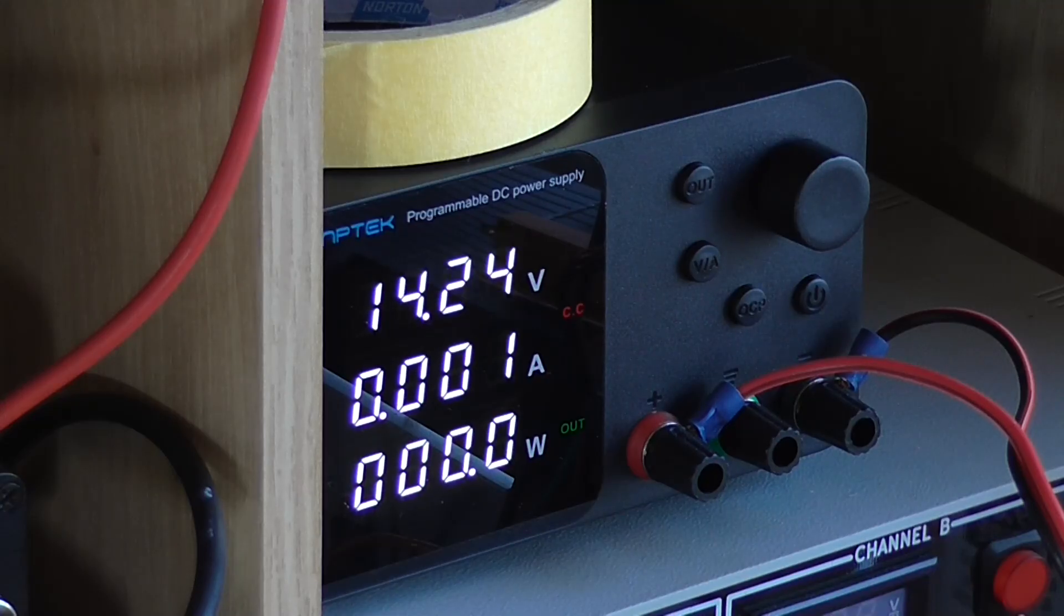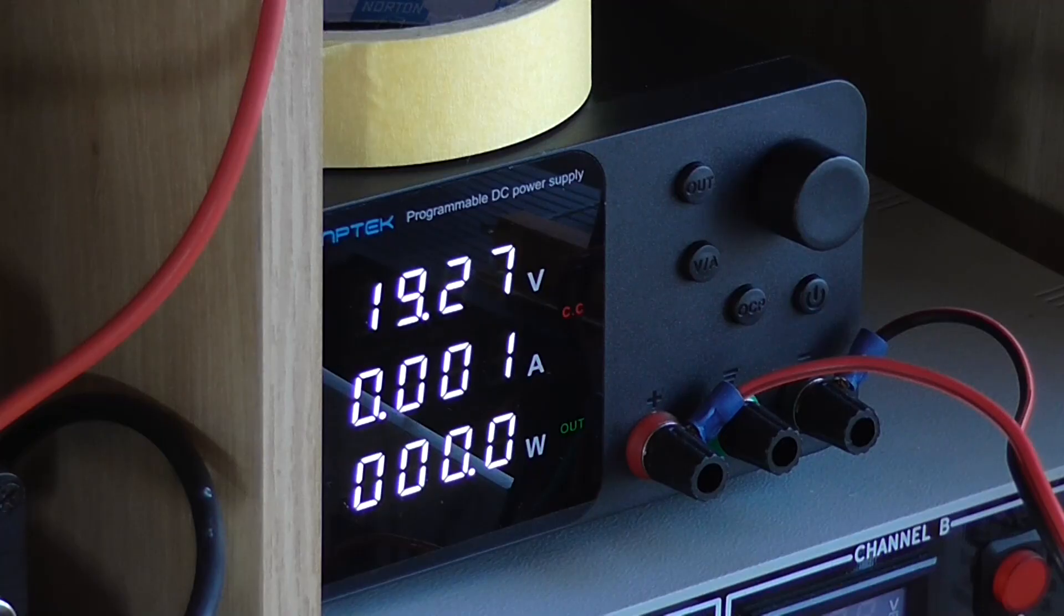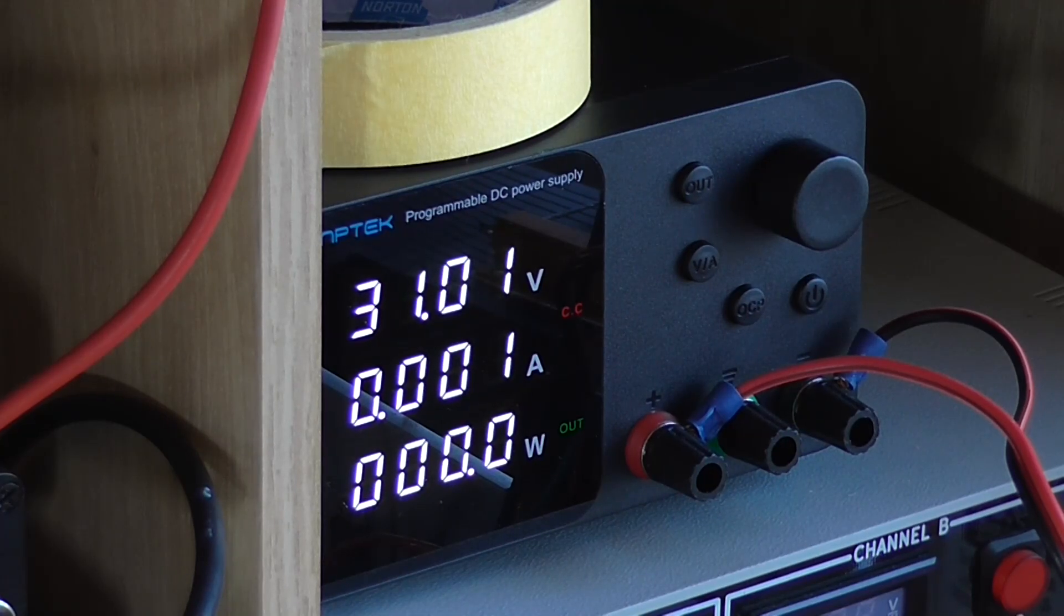And this is a slow process, especially at 1 milliamp, but at least doing it this way we can keep an eye on the capacitor for any boiling noises or smoke. And there we are, we have reached the maximum of the power supply, 31.01 volts at 1 milliamp.